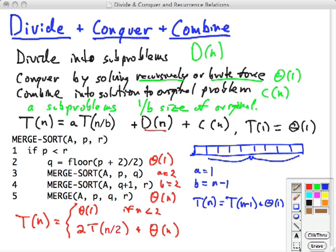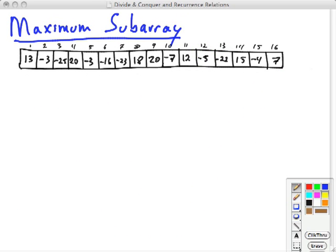Now let's look at a different example of a divide and conquer strategy. Suppose we're given an array of numbers and we want to find the maximum subarray, a range of the array that gives the maximum sum of elements. In a very large array, it may not be obvious where that subarray is.